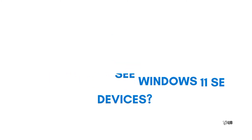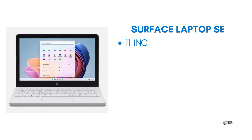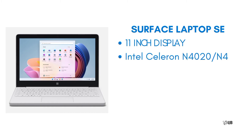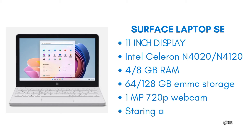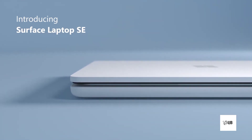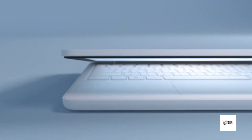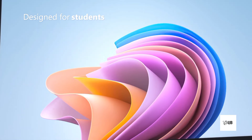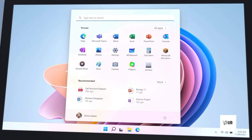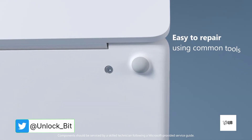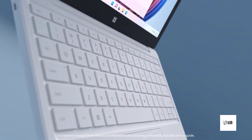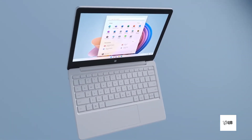The first device to feature Windows 11 SE is the $249 Surface Laptop SE, which has an 11-inch display, an Intel Celeron N4020 or N4120 processor, up to 8GB RAM, 64 or 128GB eMMC storage, a 1-megapixel 720p webcam, one USB-A port, and one USB-C port. By the specs, you may have understood who Windows 11 SE is for.